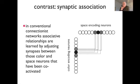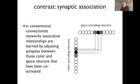I want to make a conceptual contrast with the form of binding more familiar from synaptic association. In the conventional sense you would have neurons coding for color — one neuron excited by red, another by blue — and neurons coding for space at particular locations. These represent two one-dimensional fields as discrete neurons, in a connectionist kind of modeling.